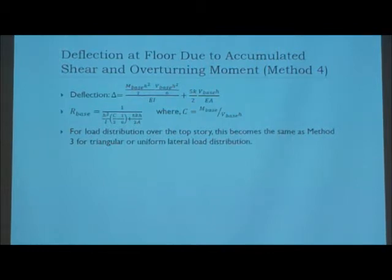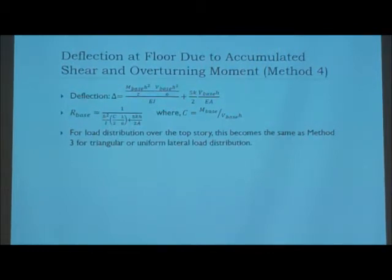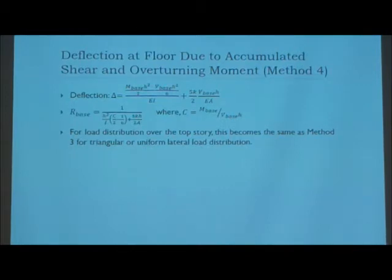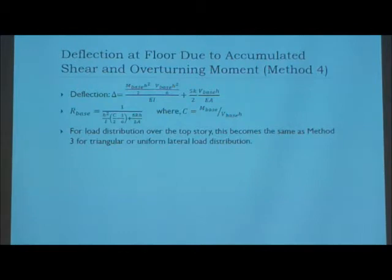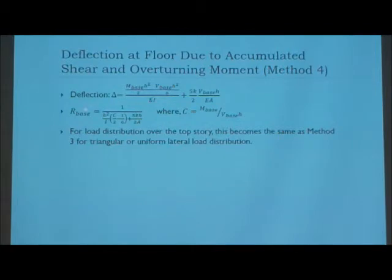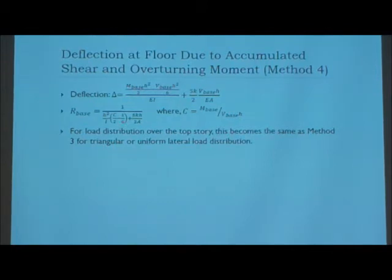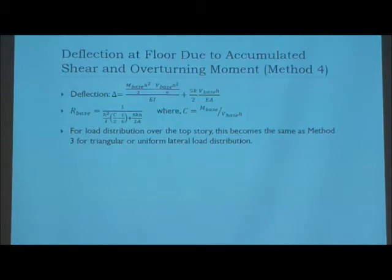The equation for Method 4 is completely different from the other three since it's a combination. It consists of two parts. To calculate the second part, you first need to calculate the first part. The equation finds your moments and shear forces as we've done before, and from that you get the deflection. You find rigidity at the base using this equation. The value C is calculated as the moment at the base divided by the shear force at the base times the height of the story under consideration.